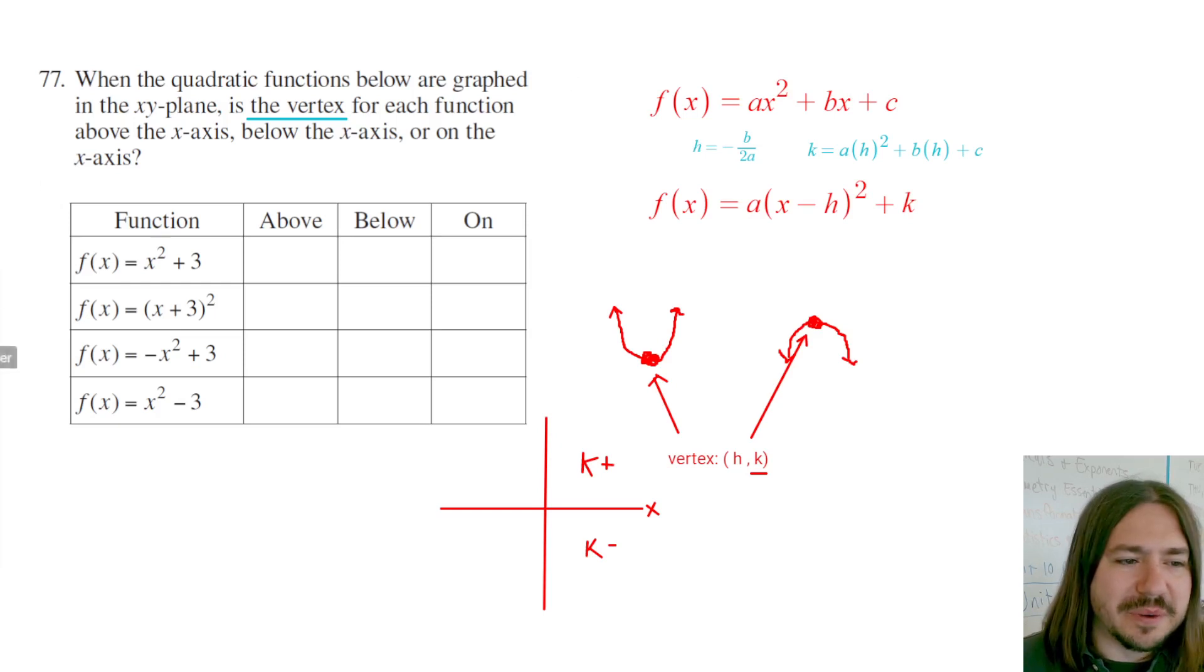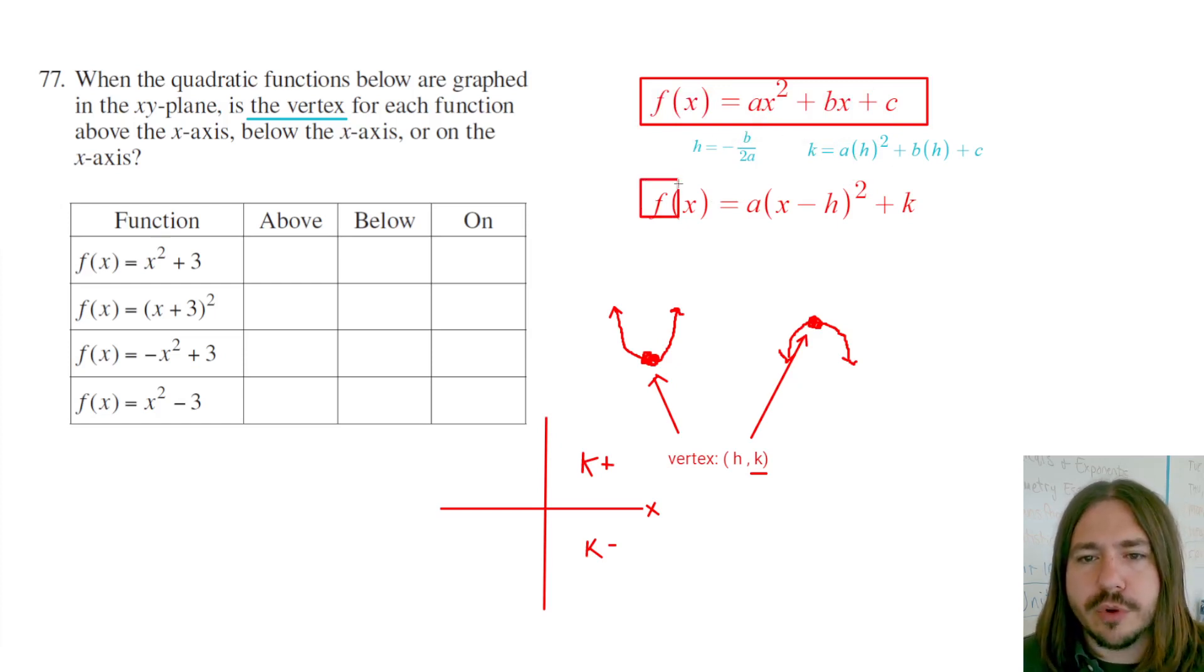All right, going back to these two forms here, we've got the standard form, and I've already described how you get the h and the k here. You do need to find the h first, and you don't really care about the k until after you found the h. But when you have vertex form, it's actually a lot easier to find the vertex. There's a reason why it's called vertex form, and that's because this h, k is where the vertex is. So you don't have to compute anything, it's just right there in the equation.